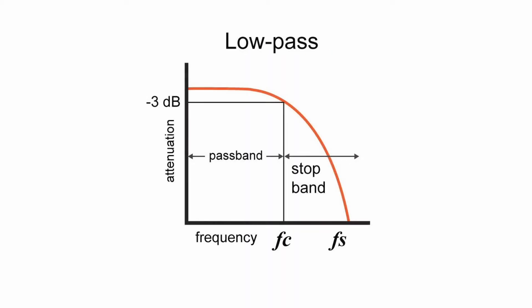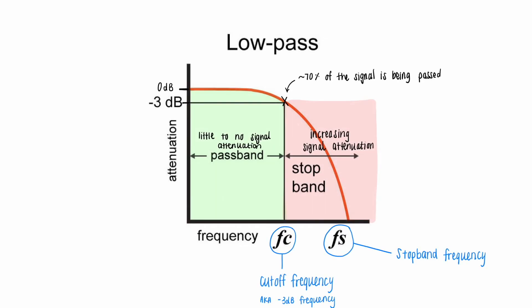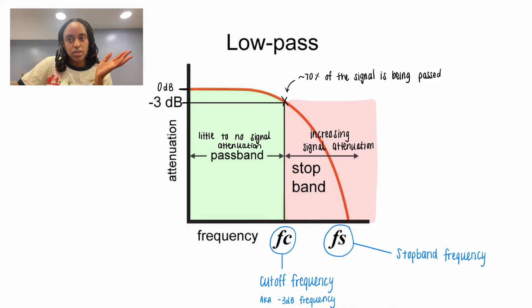If we look at the low-pass response filter curve, we can see that below the cutoff frequency, there is little to no attenuation of the signal. This is referred to as the pass band. Above the cutoff frequency in the stop band, there is much larger signal attenuation, as indicated by the negative gain.